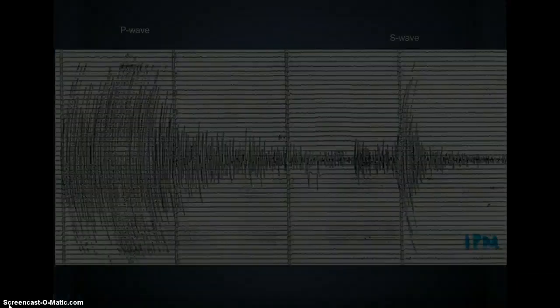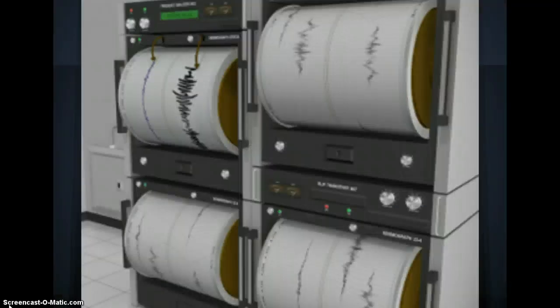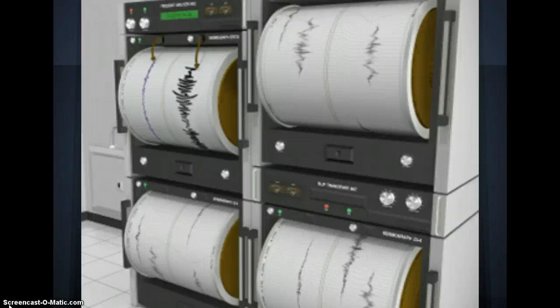The difference in arrival times between the two waves will let us figure out the distance to the earthquake's epicenter. With three seismographs at different locations, we can plot circles around the seismographs. Where all three circles intersect is where the epicenter is.